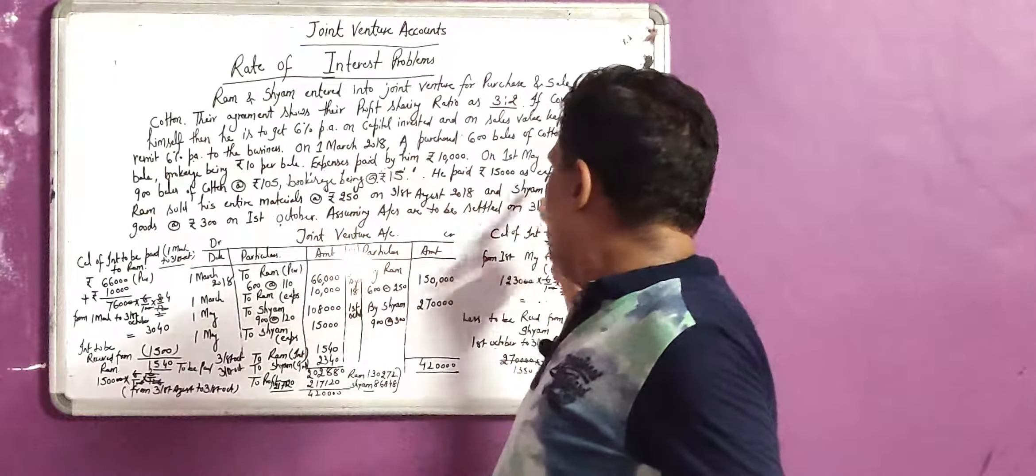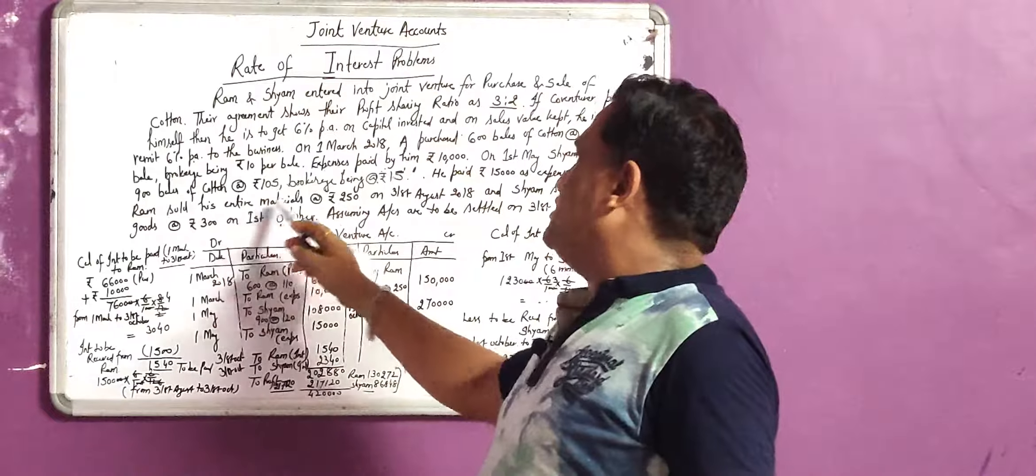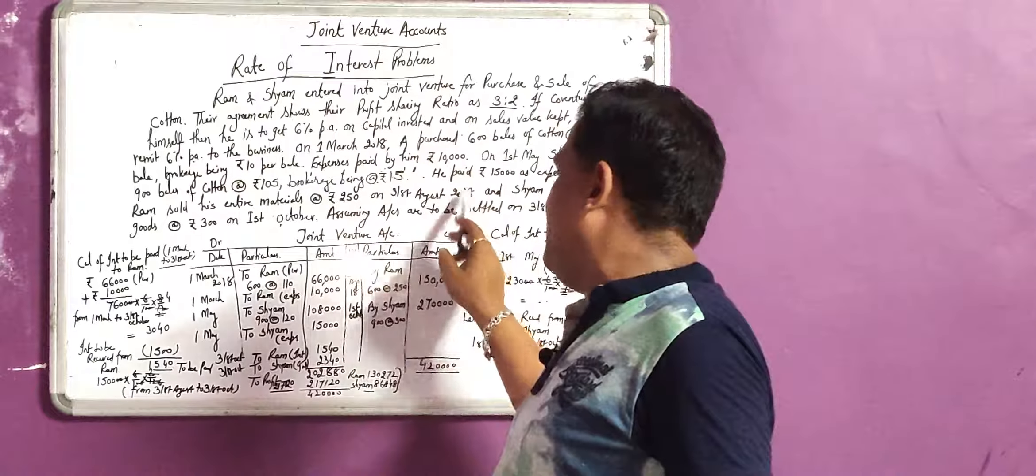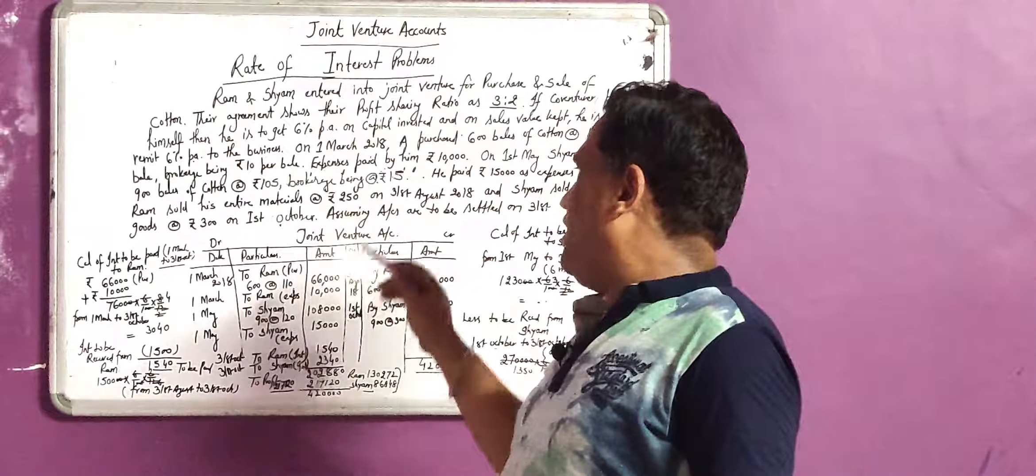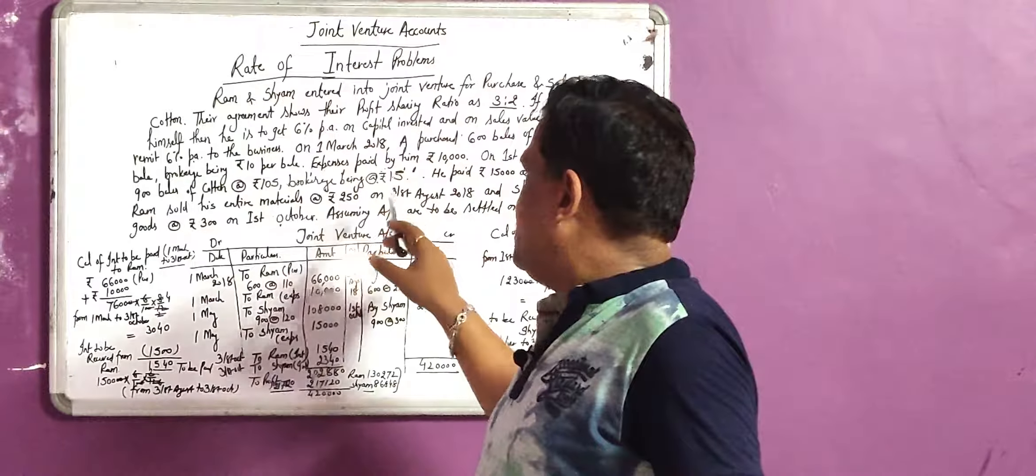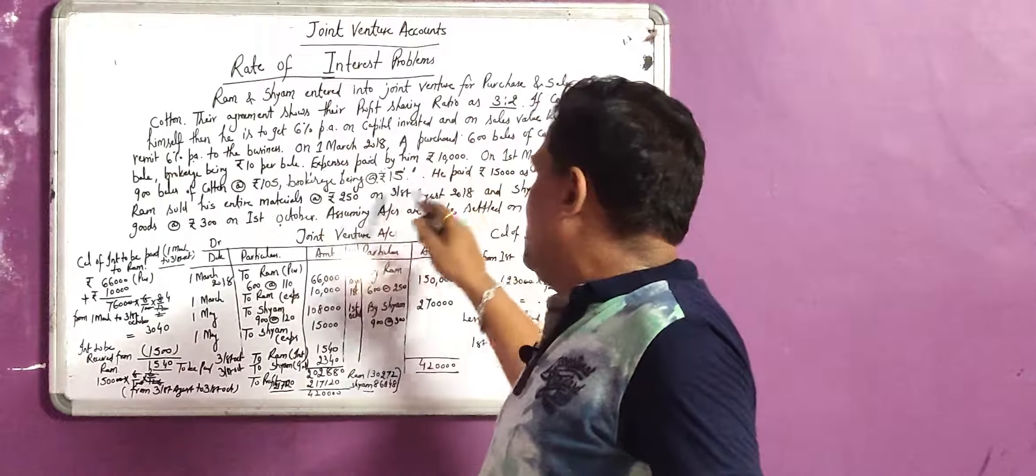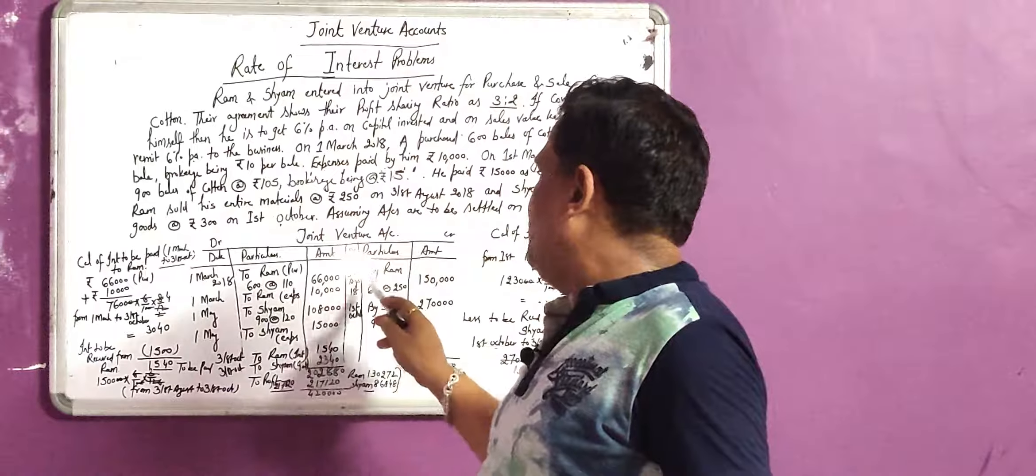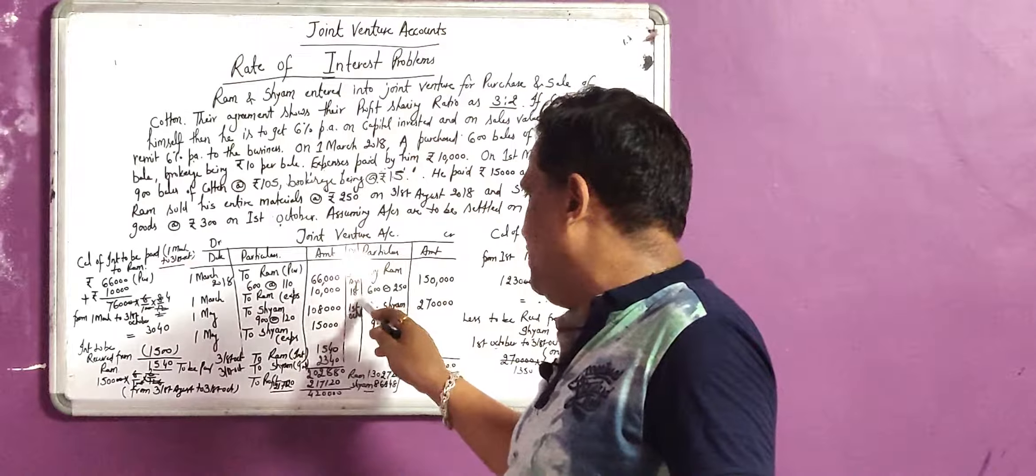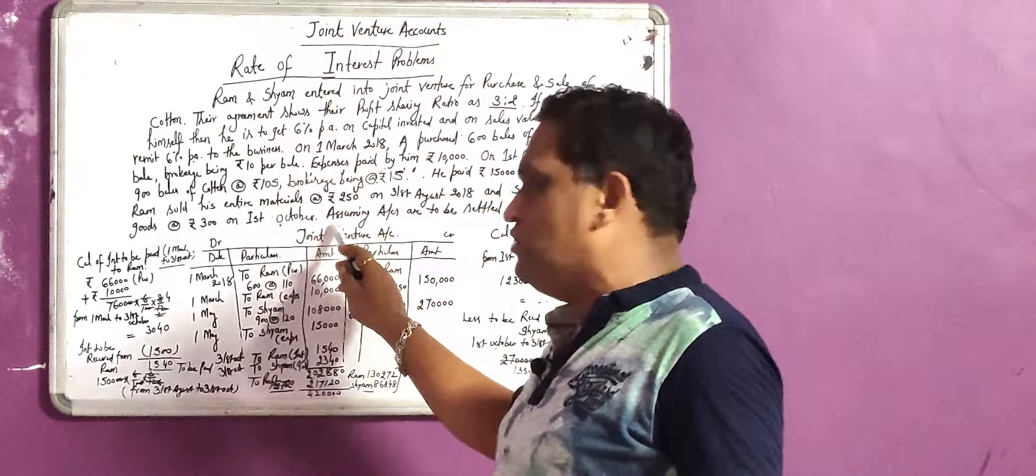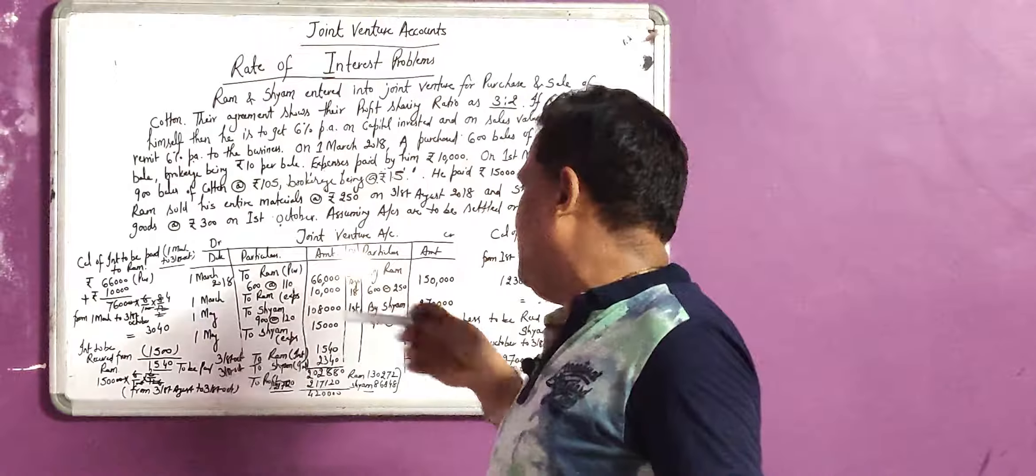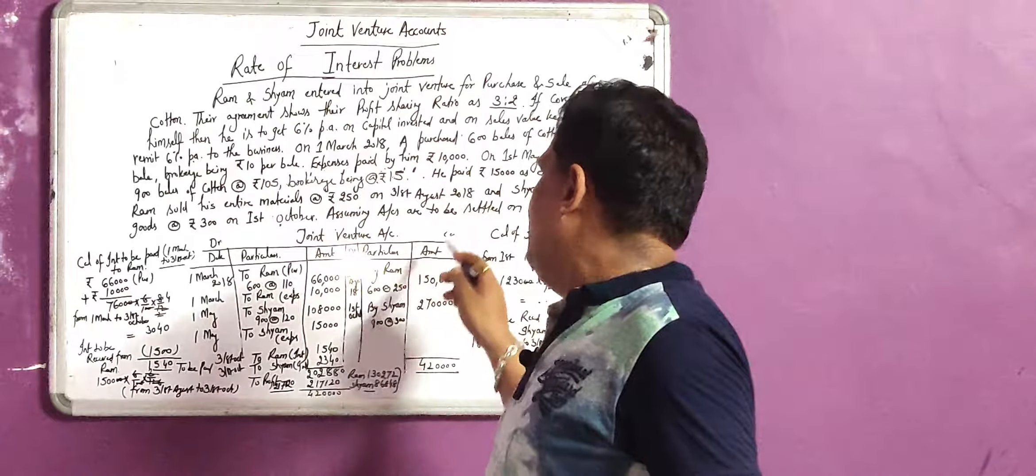On 31st August 2018, Ram sold his entire material at the rate of 250. Ram is selling his entire purchased material, the 600 bales of cotton at 250 per bale. Whenever we are selling and Ram is retaining money for some time, the entry will be Ram's account debited to joint venture. Joint venture shall be credited with the sale money. 600 multiplied by 250, that will be 150,000.